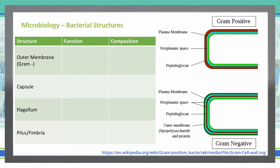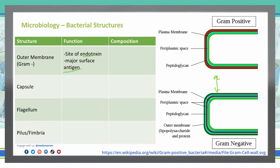On gram-negative bacteria, they have an outer membrane. That's what distinguishes gram-negative from gram-positive — that outer membrane. The outer membrane is where we see the endotoxin location, and it's also where major surface antigens present themselves. It's made up of an inner and outer leaflet — a bilipid layer. The outside leaflet has endotoxins and the lipopolysaccharide layer, and the inner leaflet is phospholipids.